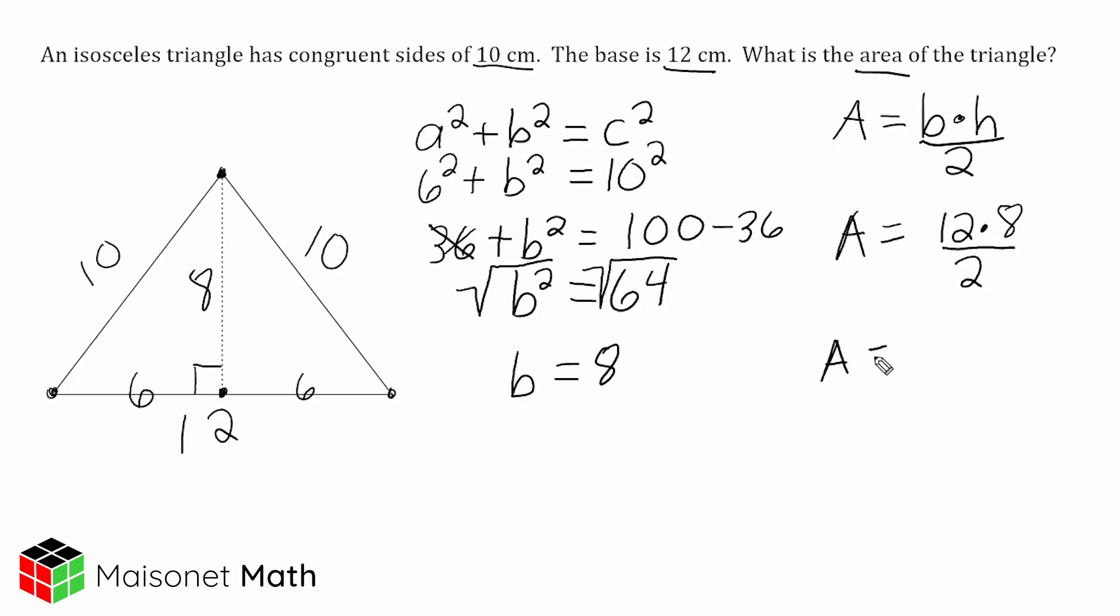What we can do now is we can take 12 times 8, which is 96, and divide that into two parts, and that would give us 48 square centimeters. So what we had to do to find the area of this triangle is we had to take advantage of the Pythagorean theorem to figure out the unknown height of this triangle. Once we determined what that height is, we plugged it into our area formula and solved.